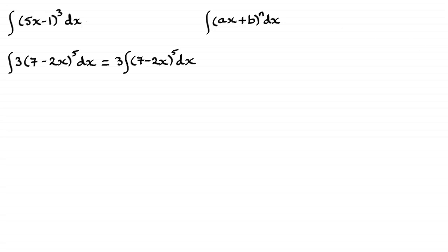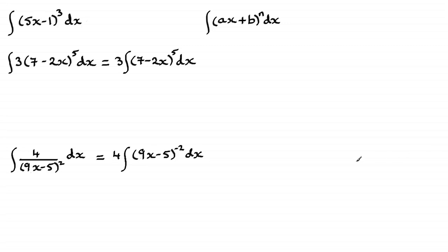You might also find integrals like this, which don't readily seem to be in this form. But with a little adjustment, we can write it in that form. We could pull out the 4 and bring 9x minus 5 squared in the denominator up to the top and use the negative power, minus 2. So clearly we've got it in that form.